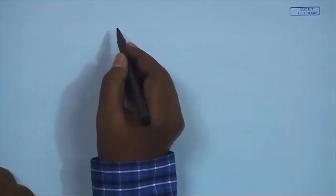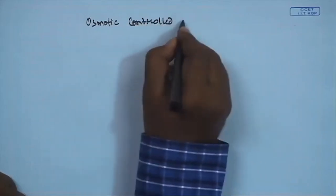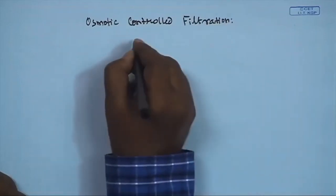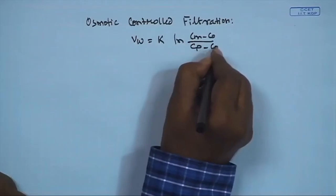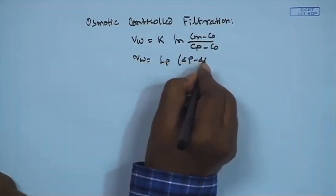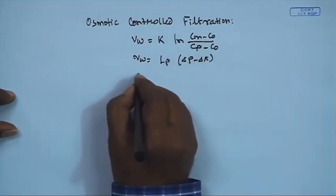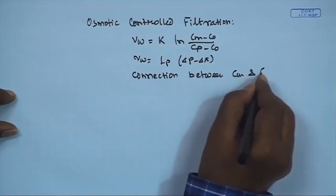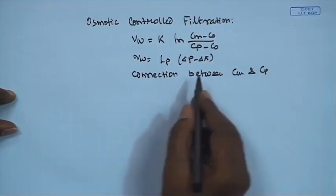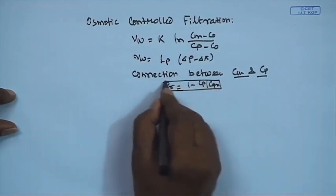Returning to the one-dimensional osmotic pressure control filtration model, we have the film theory: V_w equals k times ln[(C_m minus C_p)/(C_naught minus C_p)], Darcy's law: V_w equals L_p times (delta_p minus delta_pi), and a third equation connecting C_m and C_p — the real retention, which acts as a partition coefficient of solute concentration across the membrane surface.